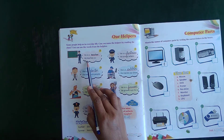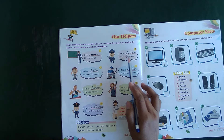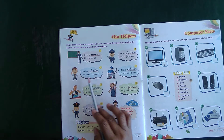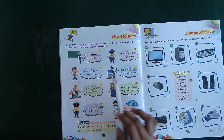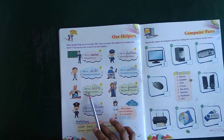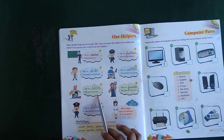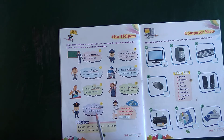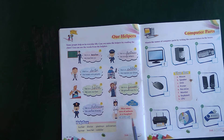He is a teacher, he teaches us. He is a postman, he brings letters. He is a doctor, he treats sick people. He is a cobbler, he mends our shoes. He is a barber, he cuts our hair. He is a farmer, he grows crops for us. He is a policeman, he catches fish. He is a doctor — he takes care of the patient. Who is a nurse?